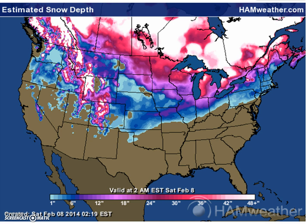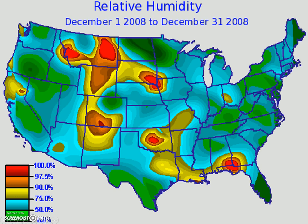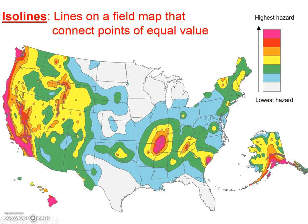We could measure wind speeds. We could measure how much snowfall is expected at different points when we have a winter storm. We could measure the relative humidity — anywhere in the United States, any single point in our country, we could measure the relative humidity. So those are all fields.